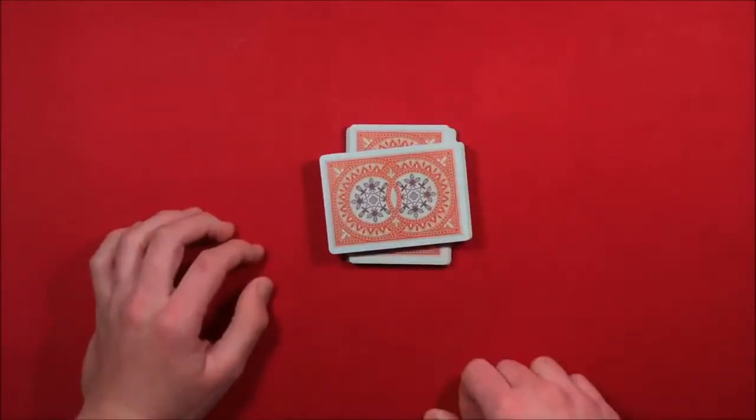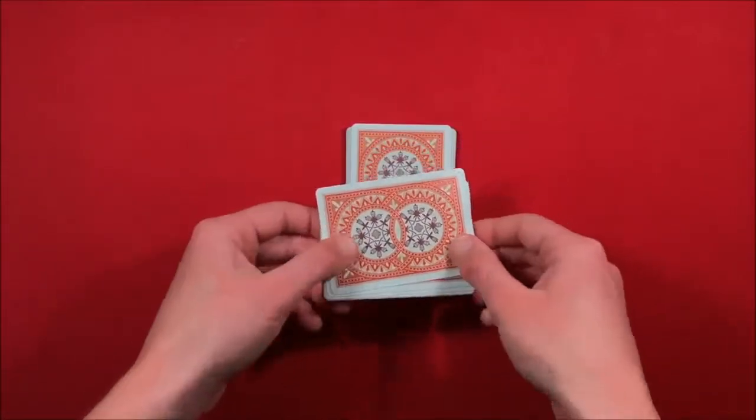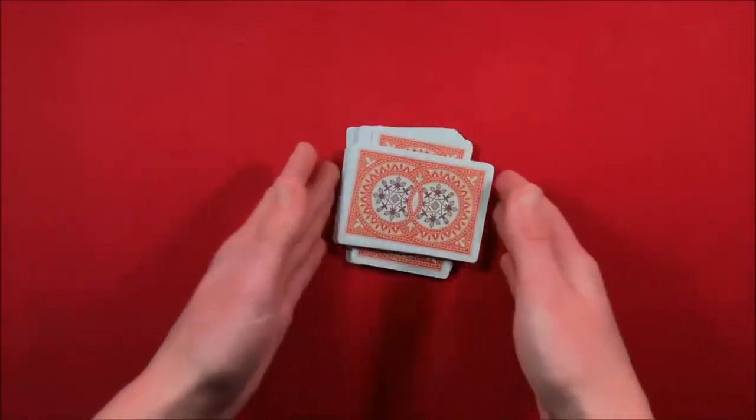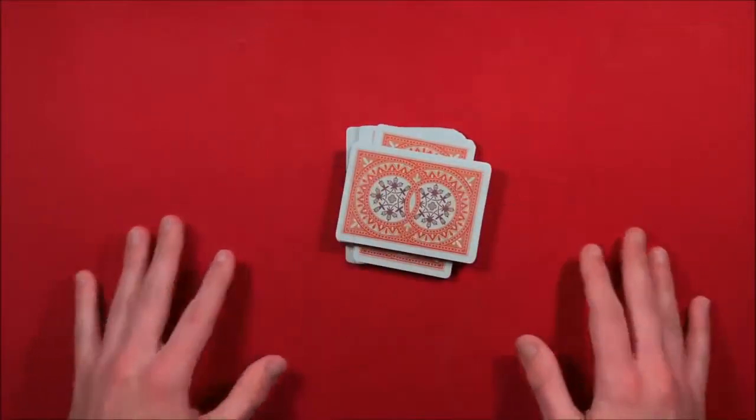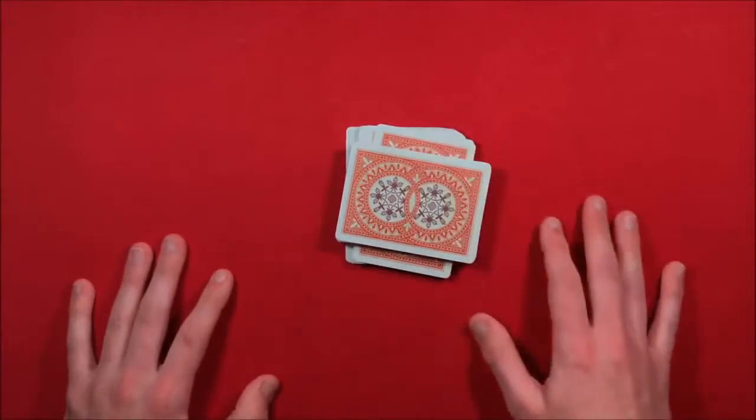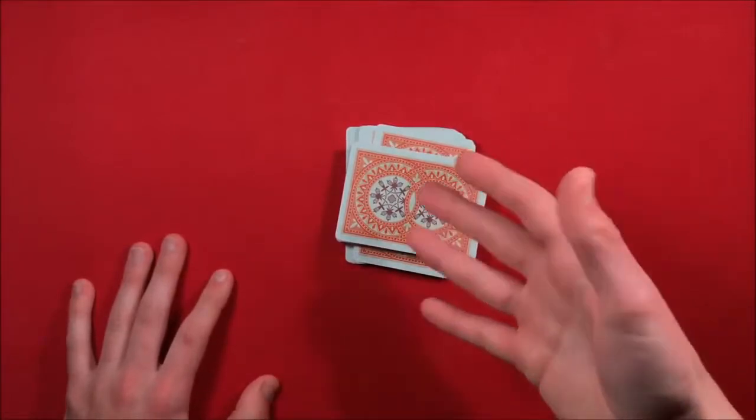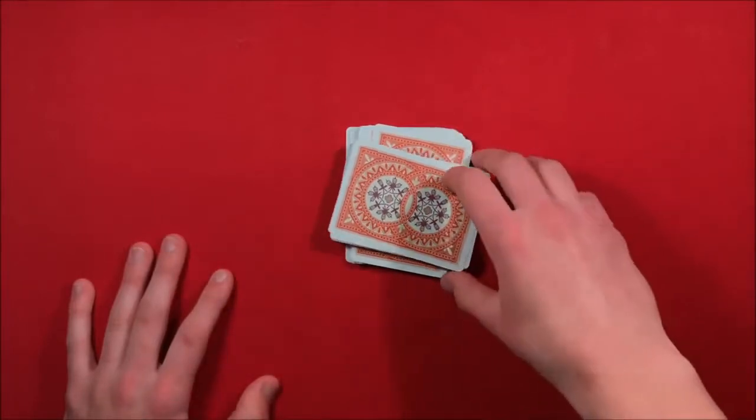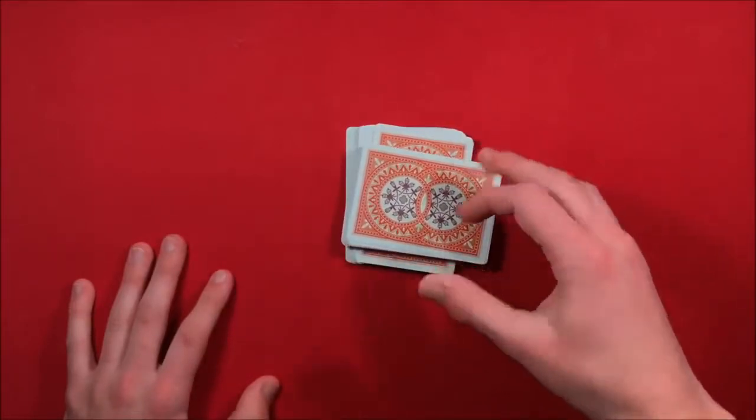tilt it, and put it on top of the other packet, and the top card is going to be right there. So that's kind of how the trick works. Then when you place the bottom packet on top of the top, you kind of misdirect them and recap the trick. This way the spectator has time to forget about the placement of these decks.